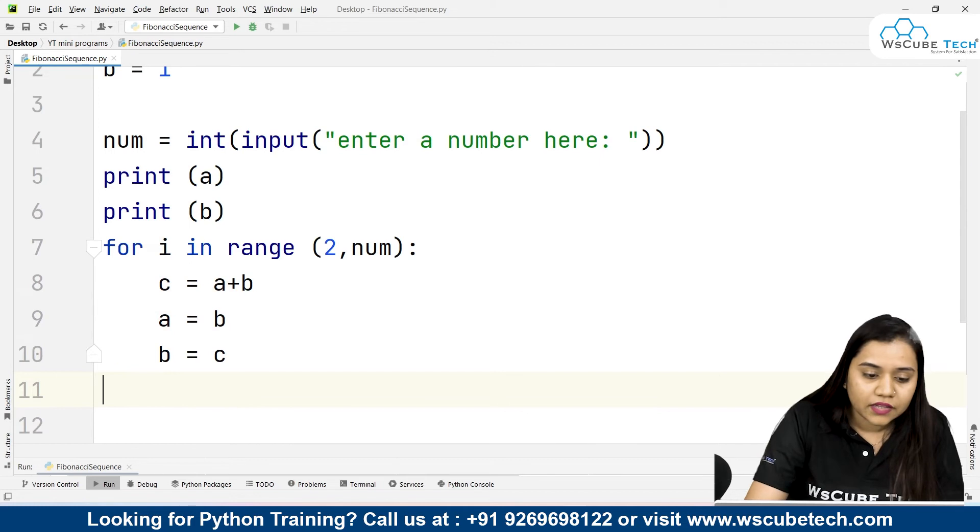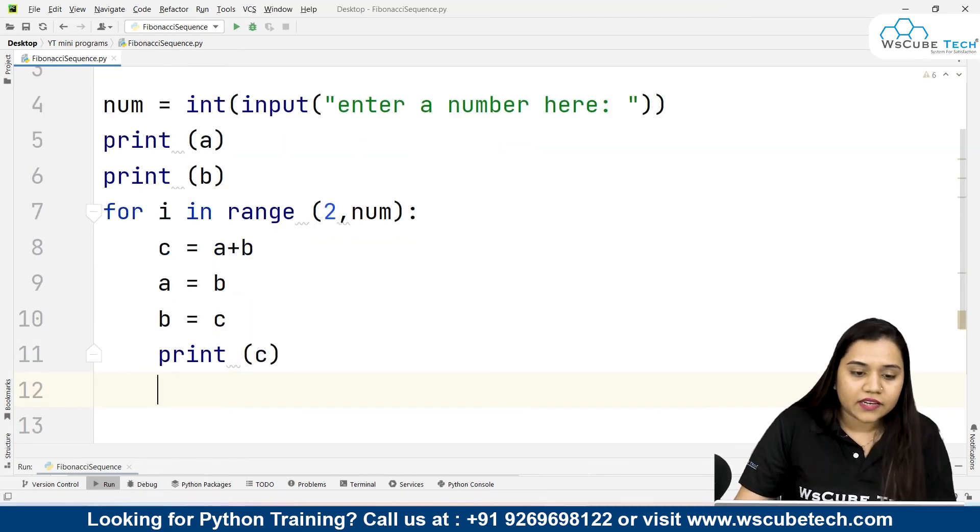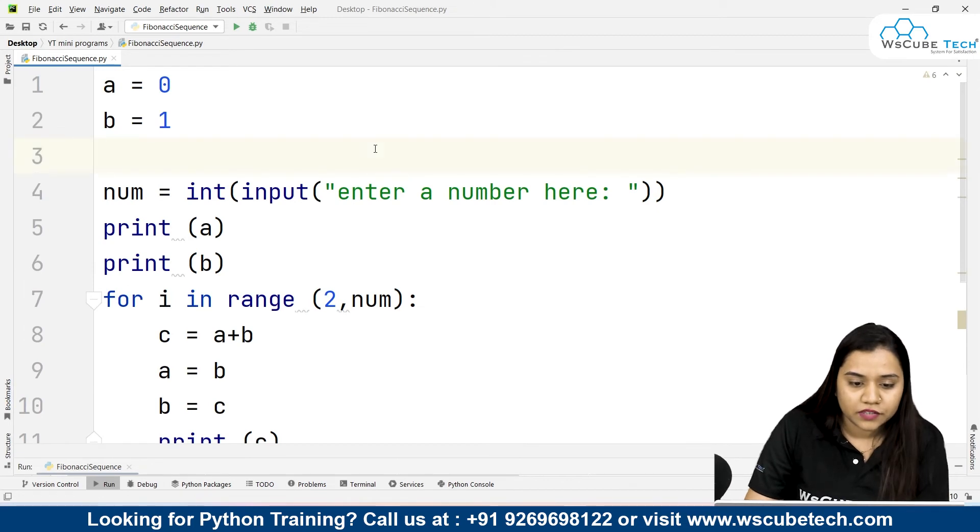Again the same iteration will happen. And in the end what we will be doing, we will be printing the C. Print C. And now let's run and see what happens over here.